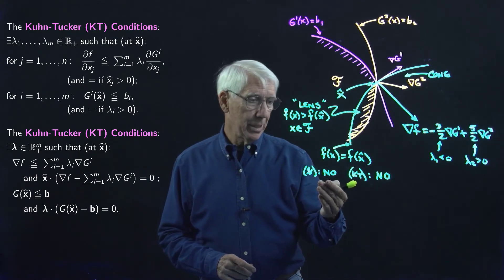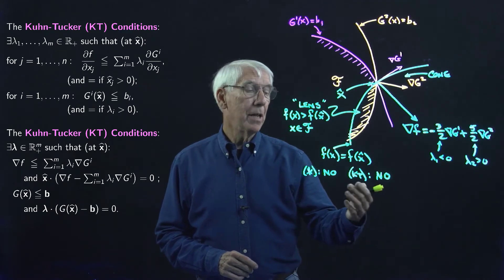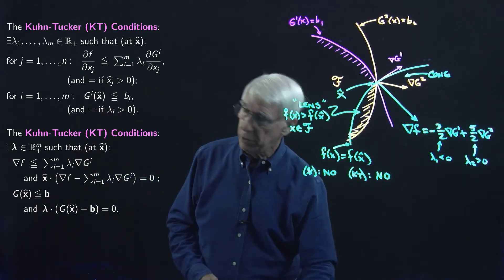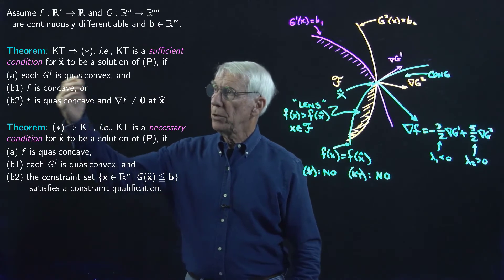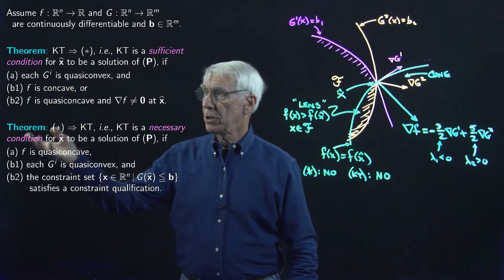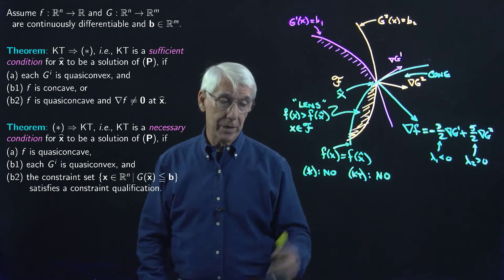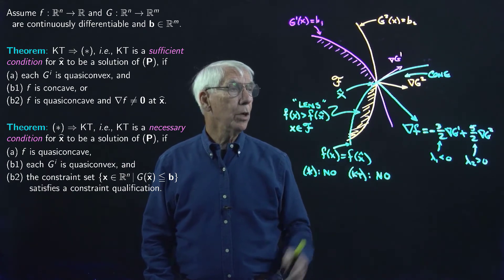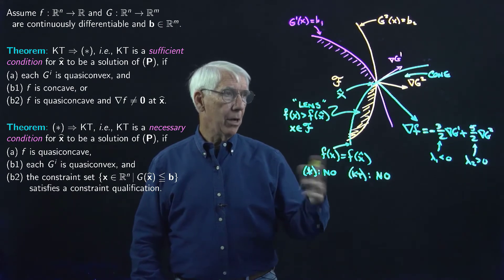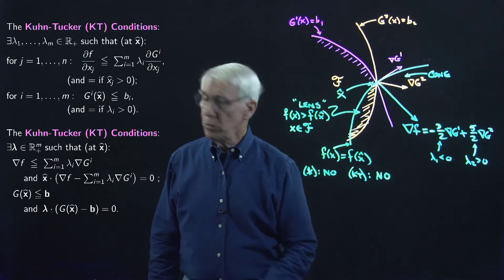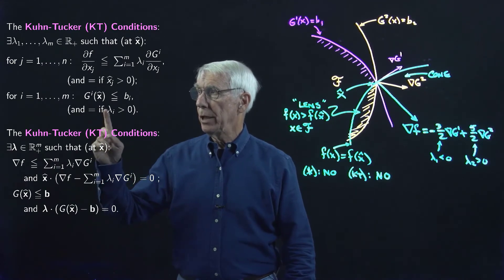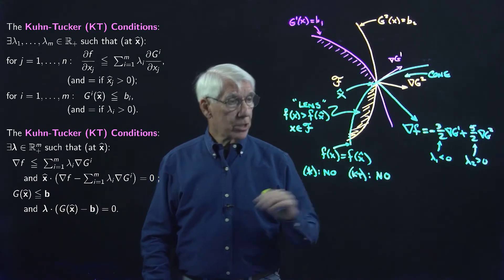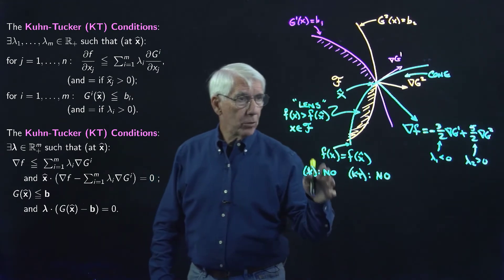Conversely, since X hat is not a solution and the Kuhn-Tucker conditions are alleged to be sufficient conditions, they couldn't be satisfied if this is not a solution. Both of our theorems are consistent: Kuhn-Tucker conditions are sufficient — not satisfied. Kuhn-Tucker conditions are necessary — not satisfied. X hat is not a solution. This is really a counterexample showing that we need the gradient of F to be a non-negative linear combination of the constraint gradients.